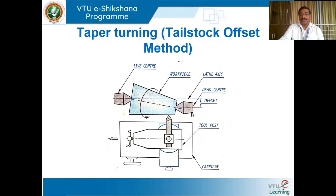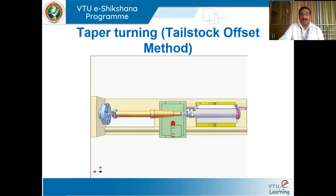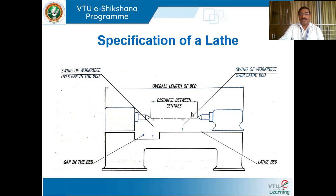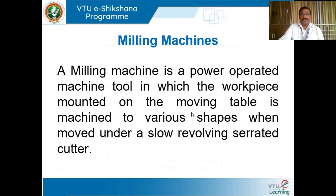In order to overcome the limitations of both methods, we have one more method — the taper attachment method. Using that method, both the limitations present in the first two methods are overcome. This was the specification of the lathe we discussed, followed by milling machines.